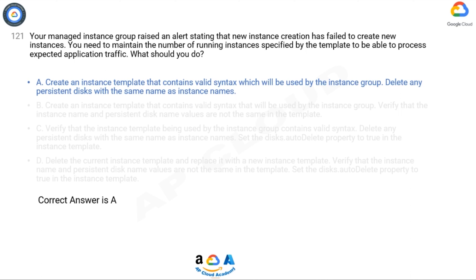Option A addresses both of these steps correctly. It emphasizes the need to create an instance template with valid syntax, ensuring that there are no errors causing the instance creation failures. Additionally, it suggests deleting any persistent disks with the same name as instance names, which resolves any conflicts. Option B only addresses the first step of creating an instance template with valid syntax. It does not mention the need to delete any conflicting persistent disks, which is an essential step to resolve the issue.